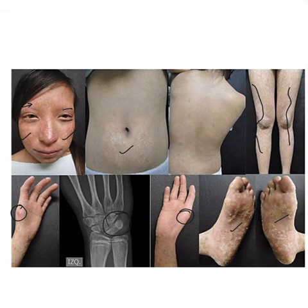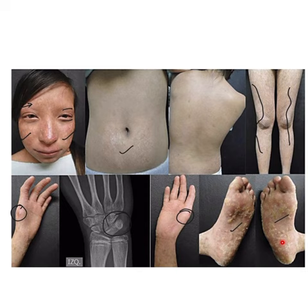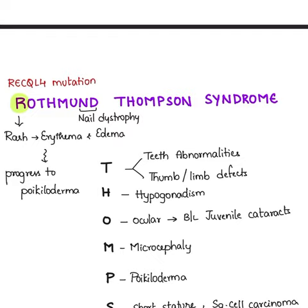It is important to follow these patients because there is an increased risk of osteosarcoma and squamous cell carcinoma developing over the hyperkeratotic lesions. Now let us quickly see how to memorize the symptoms and manifestations of Rothmund-Thomson syndrome.